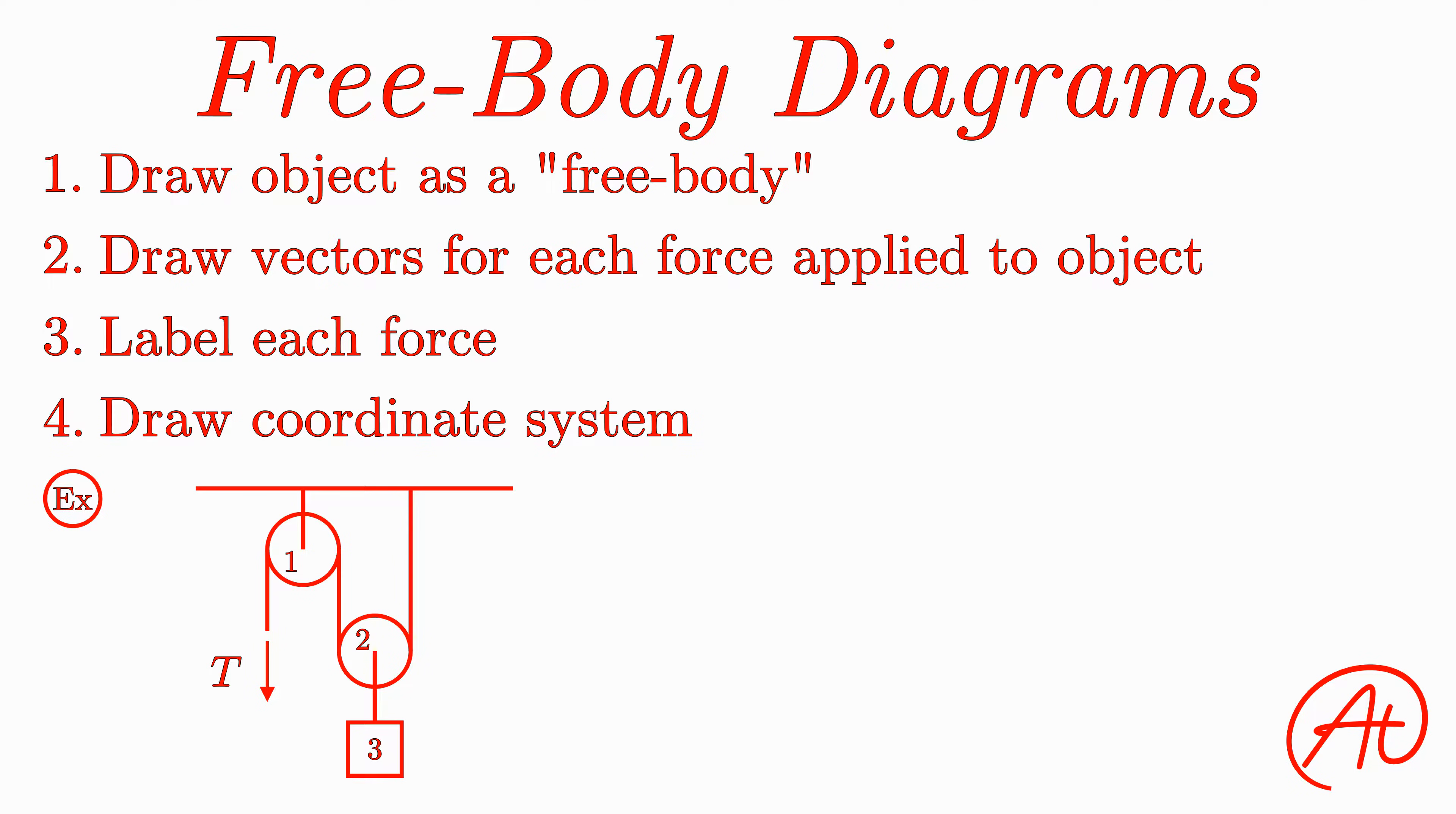Let's say we want to draw the free body diagram of wheel number two, which for this example we will assume is weightless. So first, let's draw our wheel as a simple circle free of the cable wrapped around it as well as the block hanging below it.